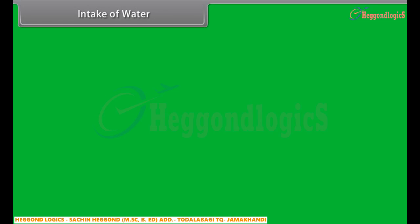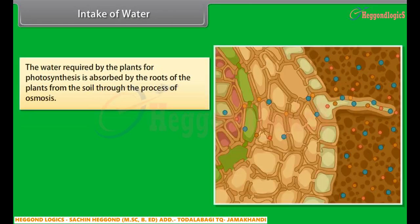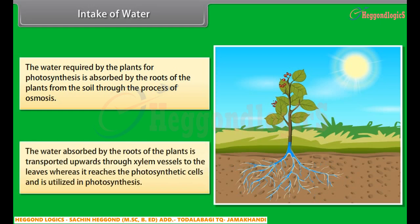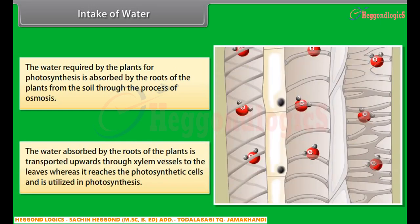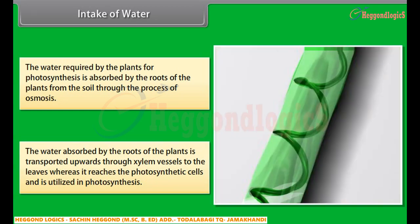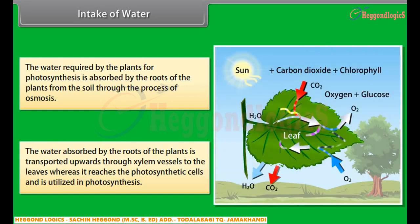The water required by plants for photosynthesis is absorbed by the roots from the soil through the process of osmosis. The water absorbed by the roots is transported upward through xylem vessels to the leaves, where it reaches the photosynthetic cells and is utilized in photosynthesis.